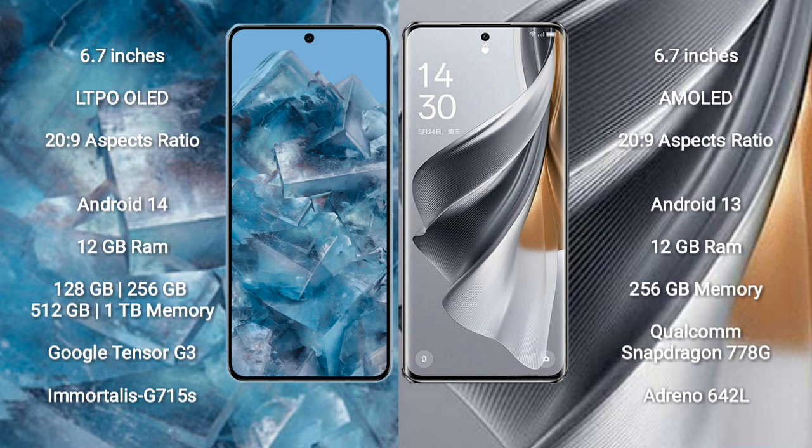The Google Pixel 8 Pro comes with 12GB RAM and 128GB, 256GB, 512GB, or 1TB internal storage options. It is powered by the Google Tensor G3 processor with an Immortalis G715S GPU.